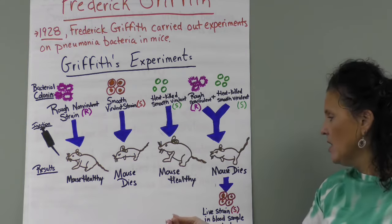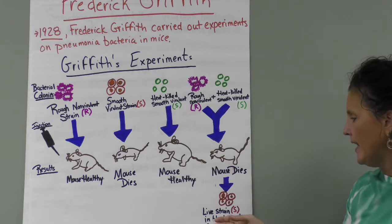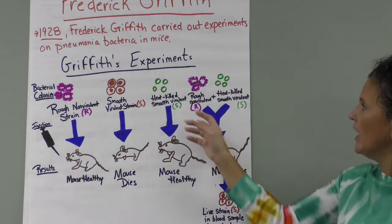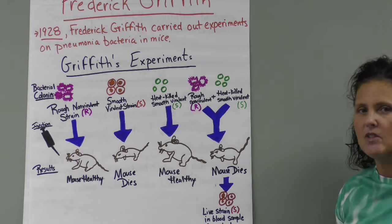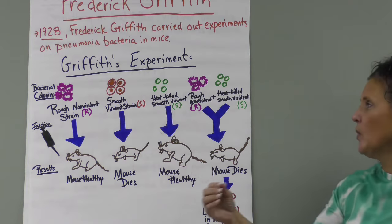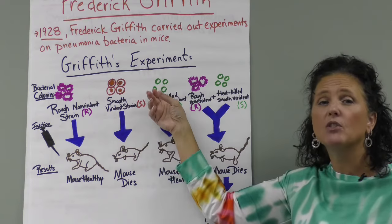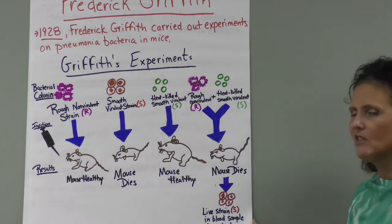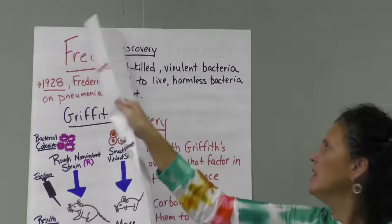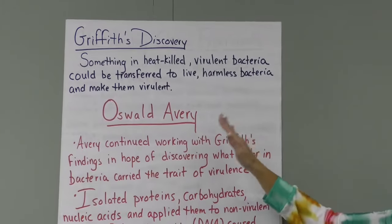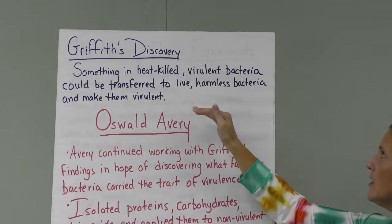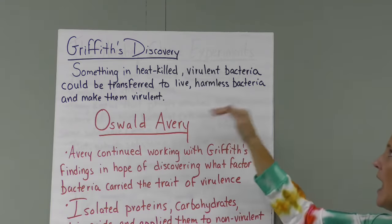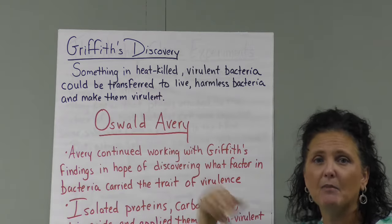Why did that happen? He took blood from the mice and found the live virulent strain in the blood sample from the dead mouse. But how did it get there? We know it wasn't in the protein coat because that was gone, so it had to be carried within the genetic material inside the cell. This process is called transformation. Something in those heat-killed virulent bacteria was transferred to the live harmless bacteria to make them virulent and kill the mouse.